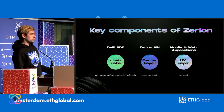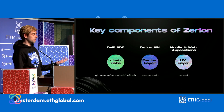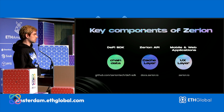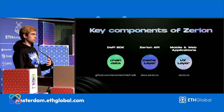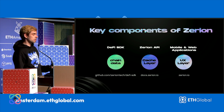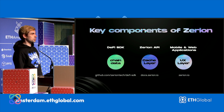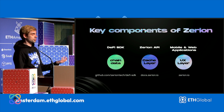Xerian consists of three key components. First is the DeFi SDK for chain data — it's available on GitHub and it's open source. Second is the Xerian API, which is essentially a caching layer for all data that we track and index across multiple blockchains. And third are the mobile and web applications that simplify user interactions, serving as our user experience layer.